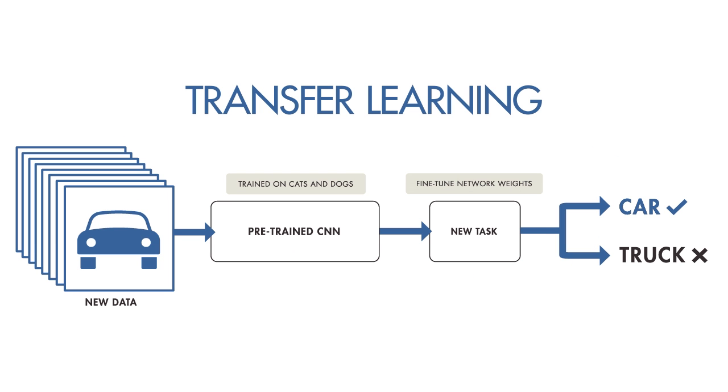The second method relies on transfer learning, which is based on the idea that you can use knowledge of one type of problem to solve a similar problem. For example, you could use a CNN model that has been trained to recognize animals to initialize and train a new model that differentiates between cars and trucks. This method requires less data and fewer computational resources than the first.